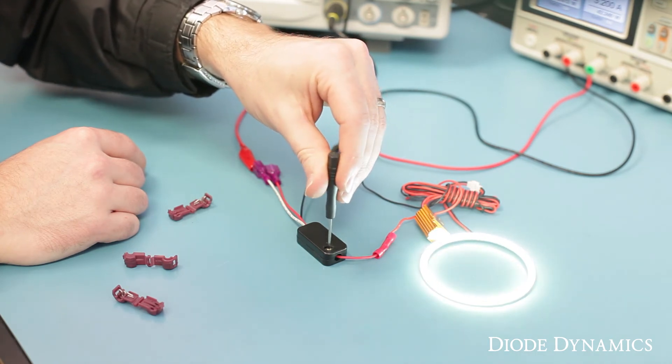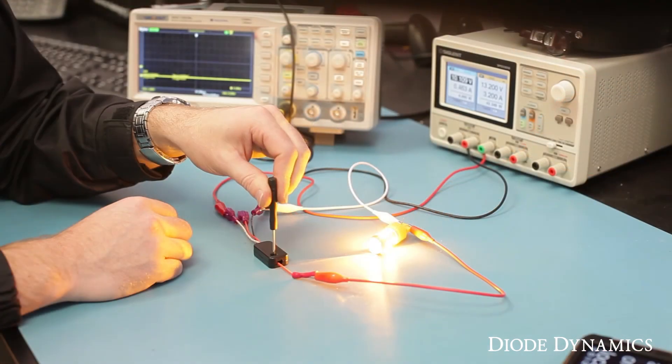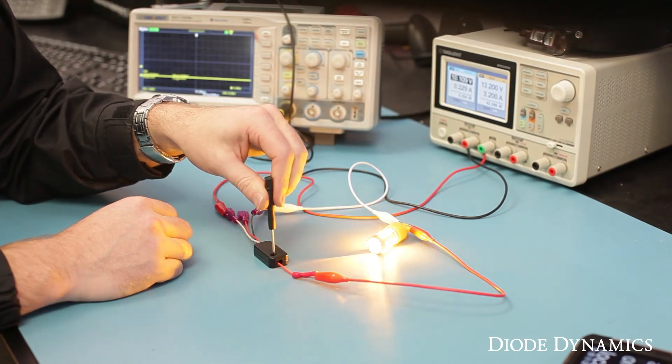This module can handle up to 2 amps, so it's perfect for any simple LED device such as halos or bulbs.